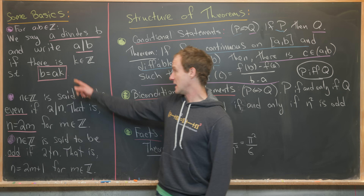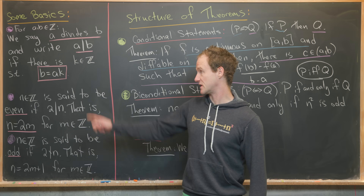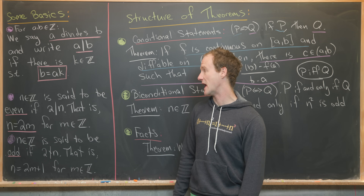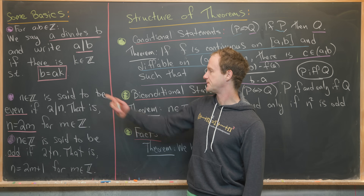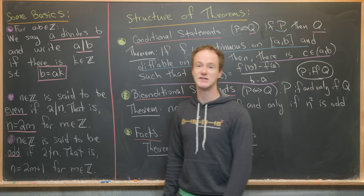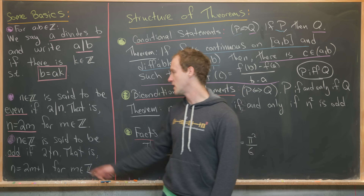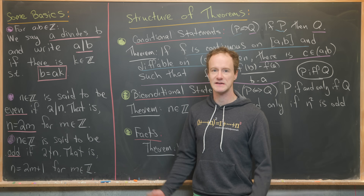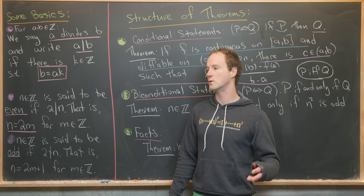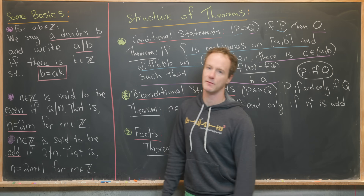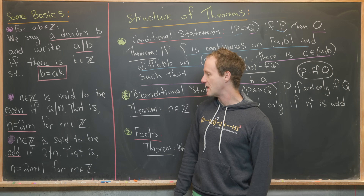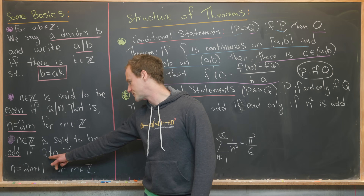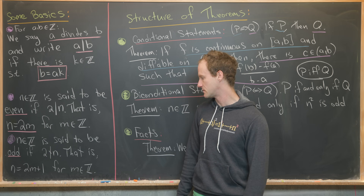For A and B in the integers, we say A divides B — written as A vertical-bar B — if there is a K, which is an integer, such that B equals A times K. In other words, B is a multiple of A. N is said to be even if it's divisible by two, which means we can write it as two times some other number.